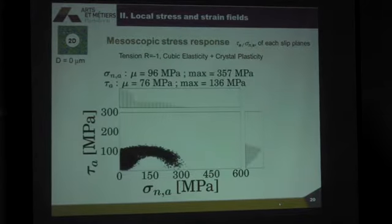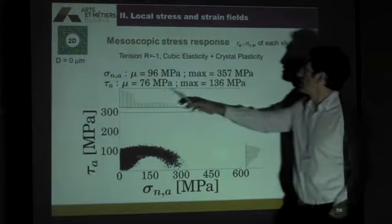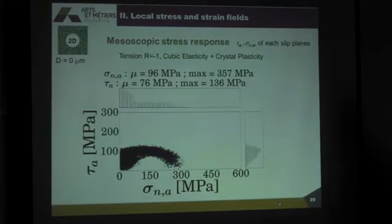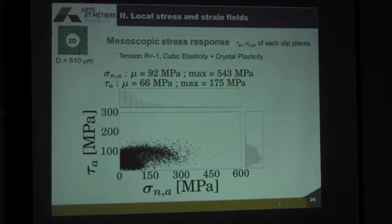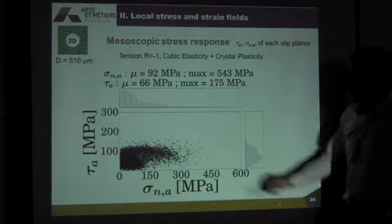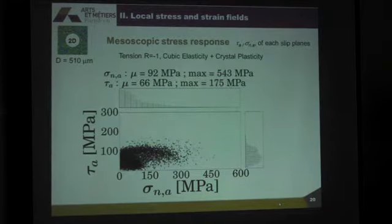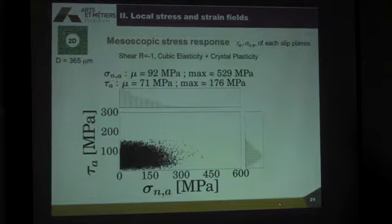Now, if we look for two different loading conditions here, and for this constitutive equation, if we look at the evolution of the distribution as a function of the defect size, you can see that when you are close to no defect, you are close to a more subtle distribution. And when you increase the defect size, you clearly see that you can have a strong evolution of the normal stress amplitude and a much less evolution of the shear stress amplitude. This is very, very important to see.